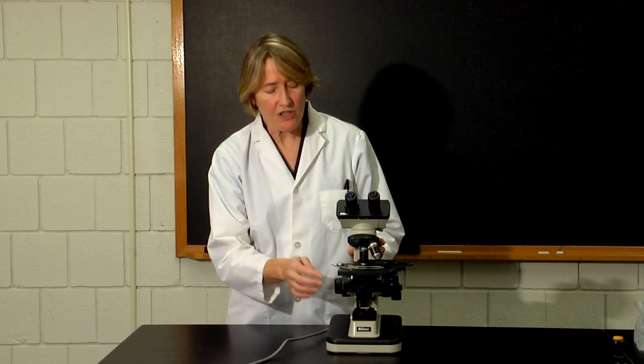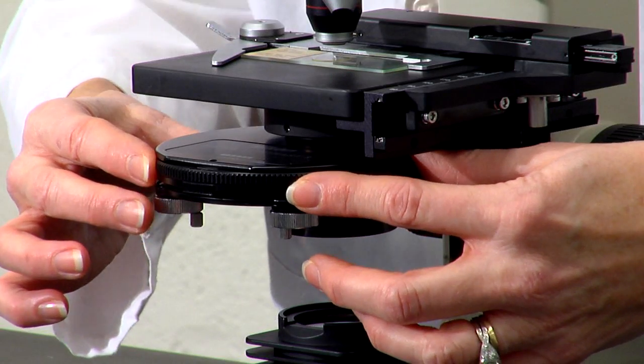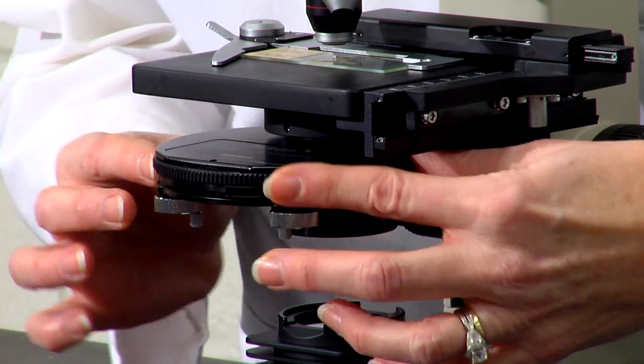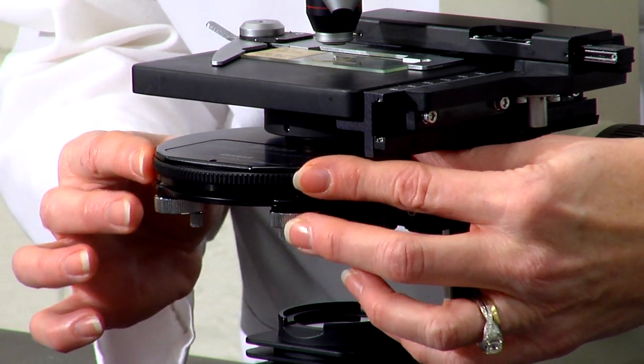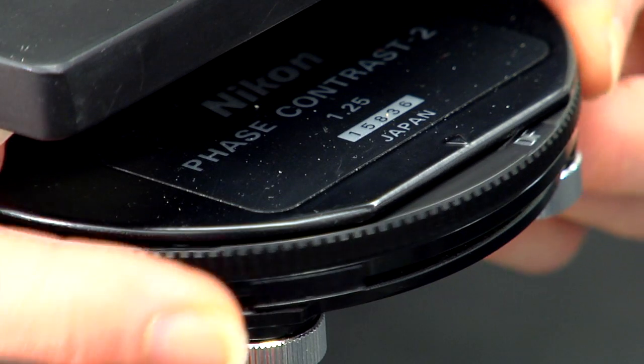To use either of these types of microscopy, you need to adjust the rotating disk in the condenser lens system. For dark field, you need to adjust the condenser lens system to DF.